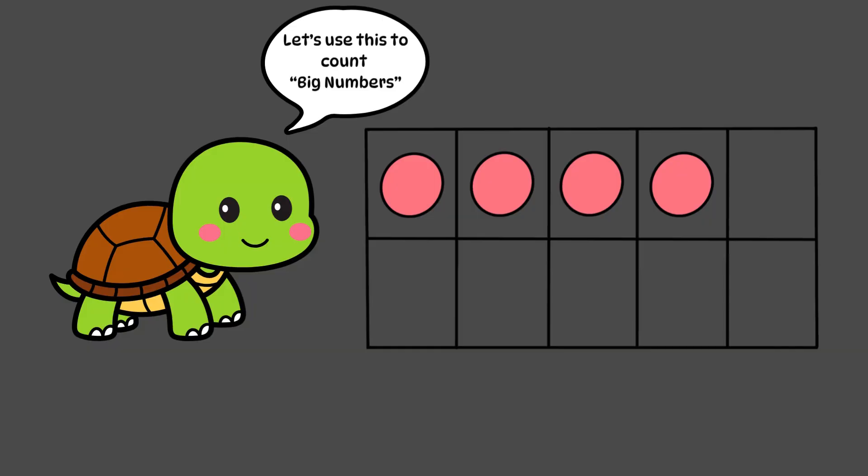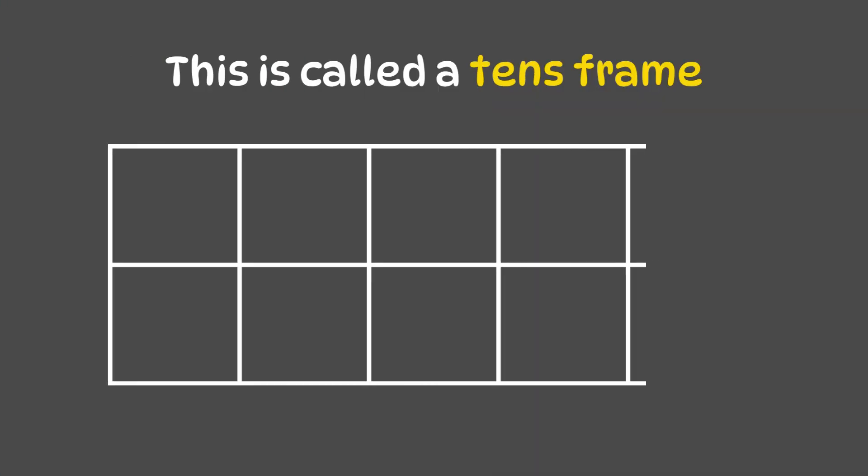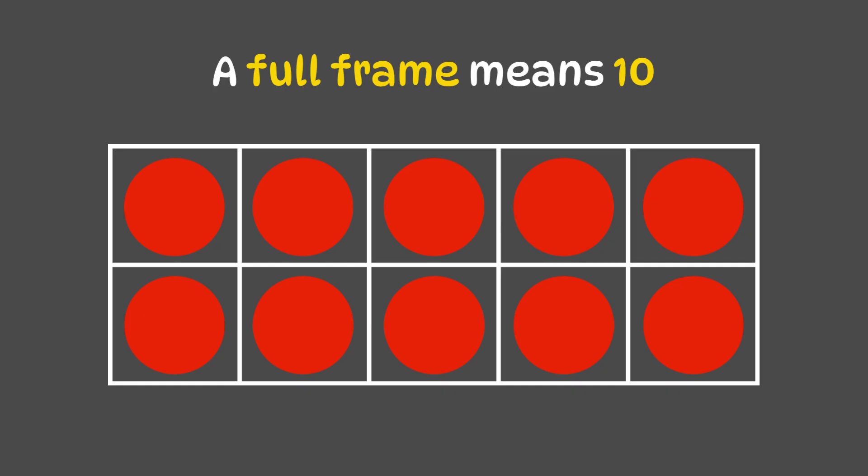Tillu looked at the tens frame. It has ten boxes. He placed one red dot in each box and counted. One, two, three, all the way to ten. A full frame means ten. Tillu smiled.